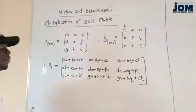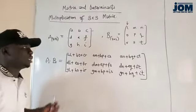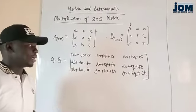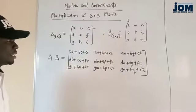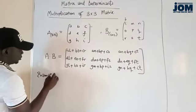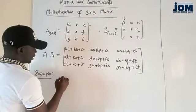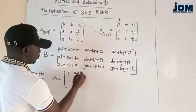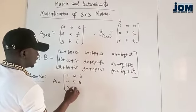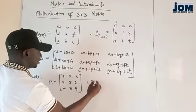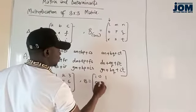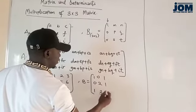Now, if you can be able to do such, you have already done the multiplication of a 3x3 matrix. Now, let us take an example and see it together. Suppose we have a given matrix A equal to 1, 2, 3, 4, 5, 6, 7, 8, 9. And another matrix B equal to 1, 0, 1, 0, 2, 1, 1, 3, 1.